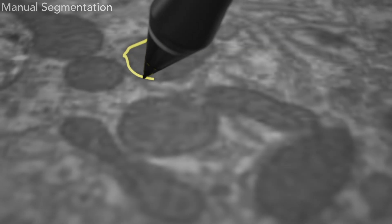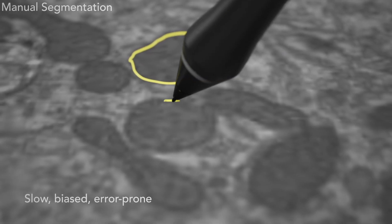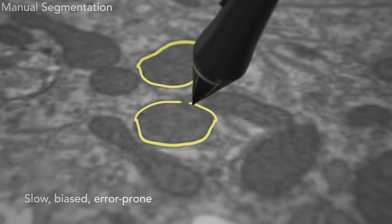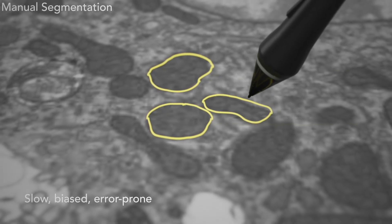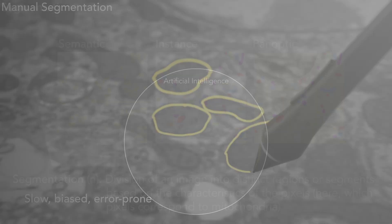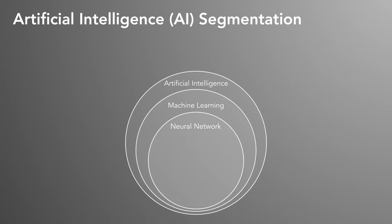Traditionally, segmentation has been done manually. But manual segmentation is extremely time consuming and prone to errors and biases. Artificial intelligence has tremendous potential here. For example, an AI model that recognizes mitochondria with high precision and accuracy could dramatically accelerate segmentation.